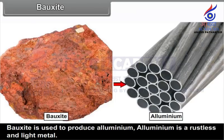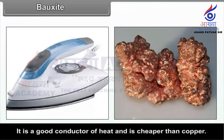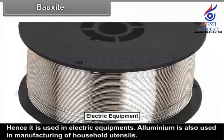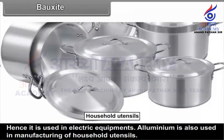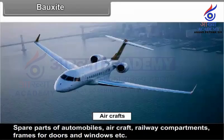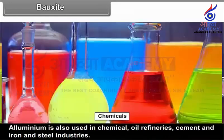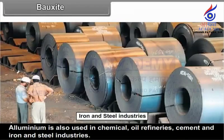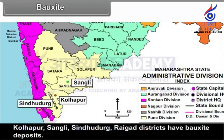Bauxite. Bauxite is used to produce aluminium. Aluminium is a rustless and light metal; it is a good conductor of heat and is cheaper than copper, hence it is used in electric equipment. Aluminium is also used in manufacturing of household utensils, spare parts of automobiles, aircraft, railway compartments, and frames for doors and windows. Aluminium is also used in chemical, oil refinery, cement and iron and steel industries. Maharashtra is the leading bauxite-producing state in India. Kolhapur, Sangli, Sindhudurg, and Raigad districts have bauxite deposits.